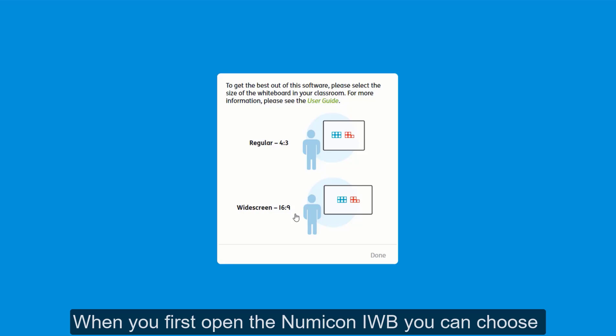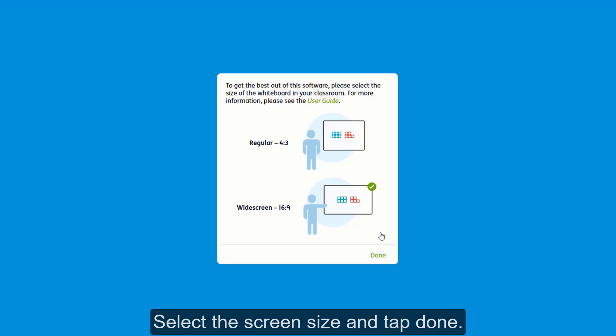When you first open the Numicon IWB, you can choose the display size of the whiteboard in your classroom. Select the screen and tap Done.